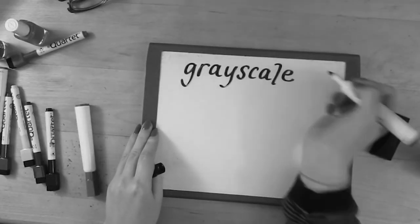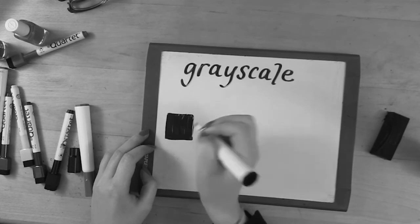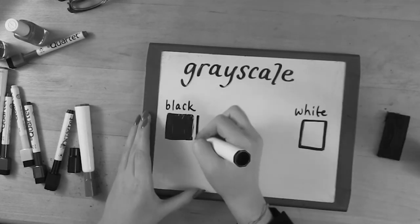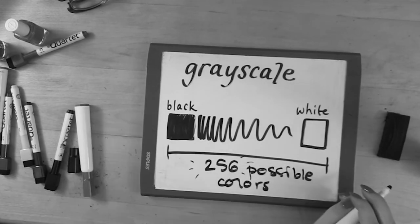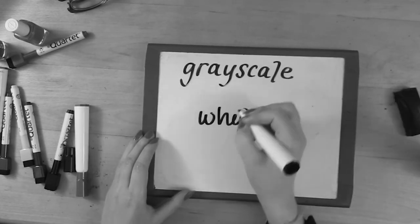In a grayscale image, this intensity of light ranges from black to white. In between, there's a total of 256 possible colors or light intensities. But why 256?